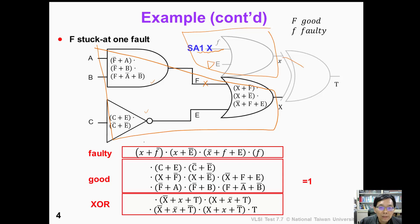Finally, we take the good output, which is big X, and the faulty output, which is small x, into a miter. As long as we can find an input assignment that satisfies T equal to 1, then we find the test pattern.